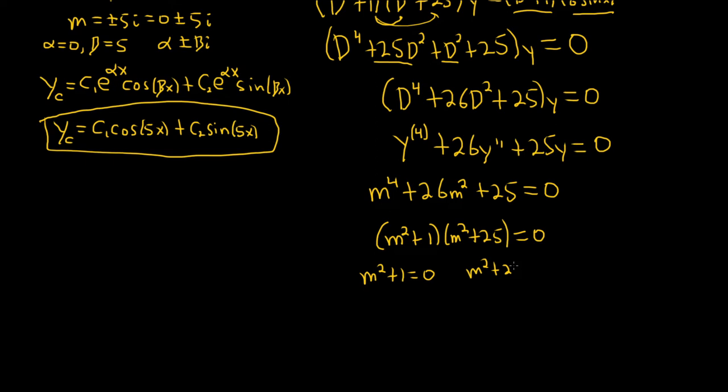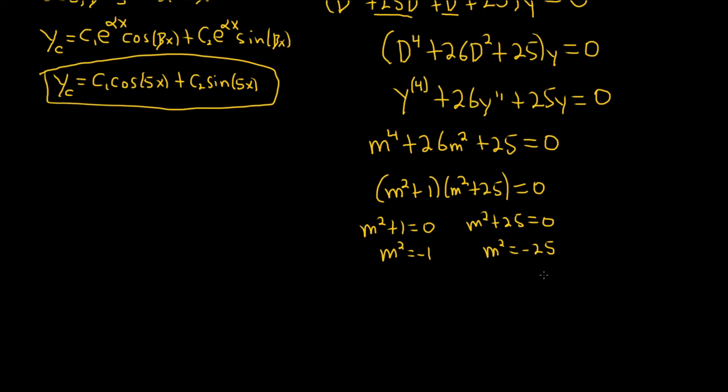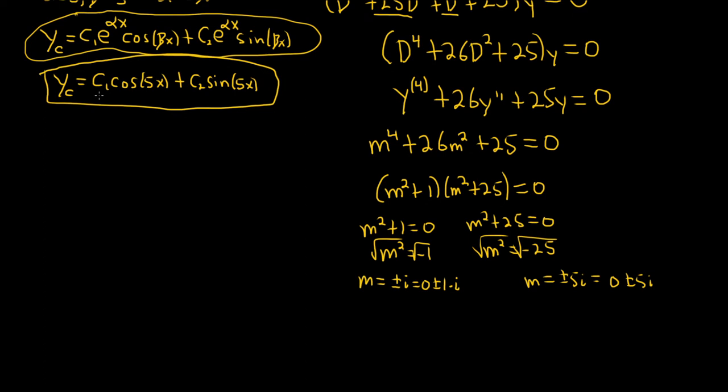From m² = −1 we get m = ±i, which is of the form 0 ± 1·i. From m² = −25 we get m = ±5i, which is of the form 0 ± 5i. Now we can apply the formula y_c = e^(alpha x)[c1 cos(beta x) + c2 sin(beta x)] to each of these.